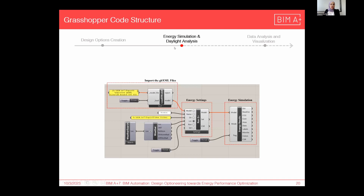For the energy simulation and daylight analysis, we have this Grasshopper simple code. In the first part, we are importing the gbxml files, then we have the energy settings, and then we run the simulation. The output of this simulation is one Excel file.